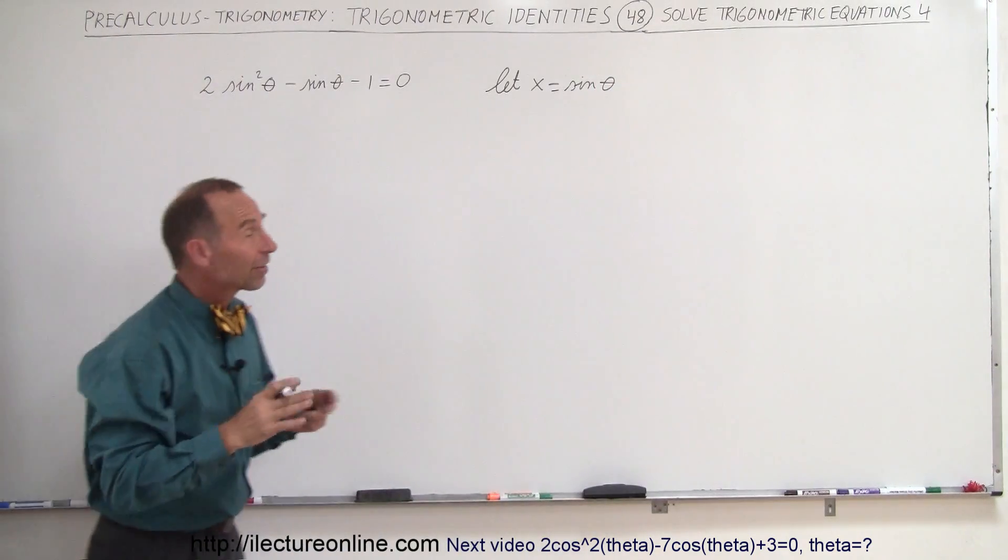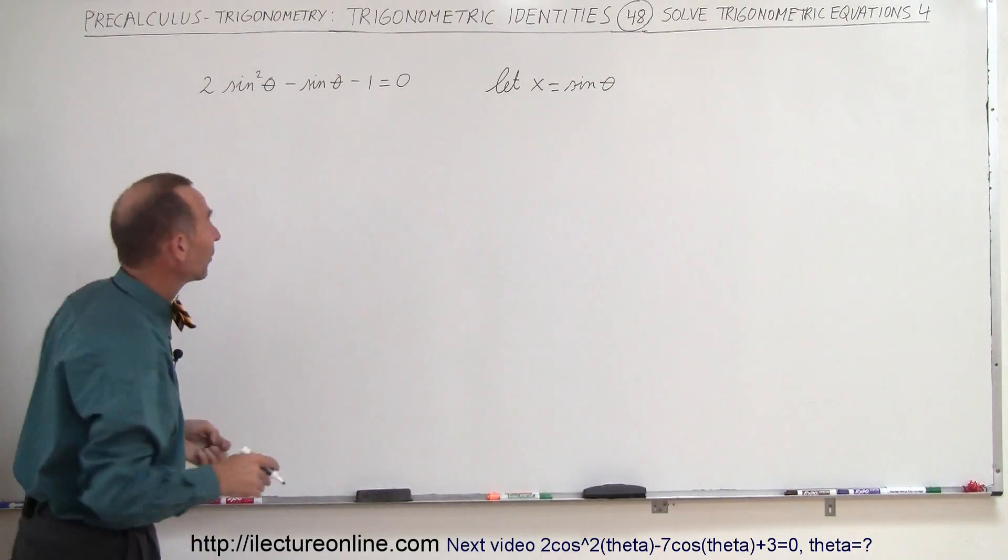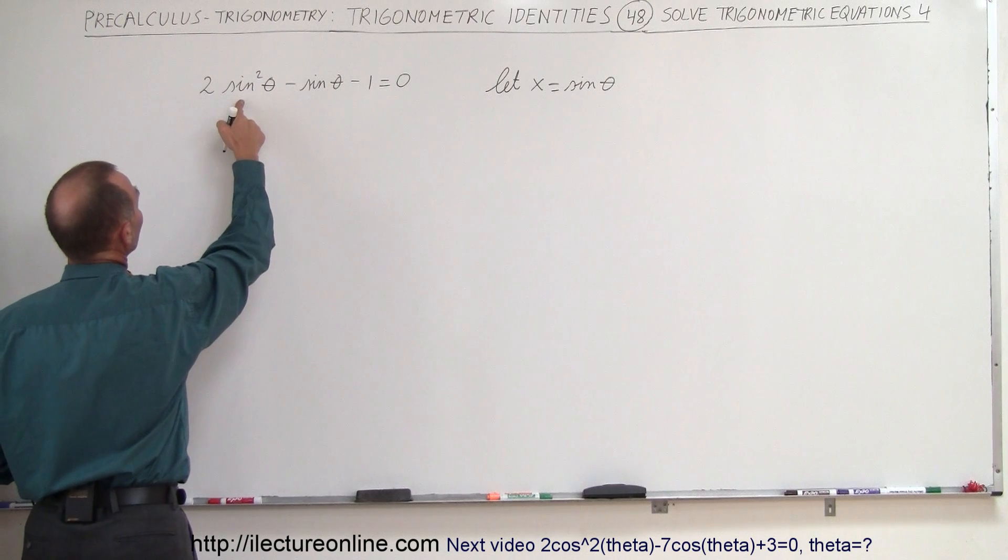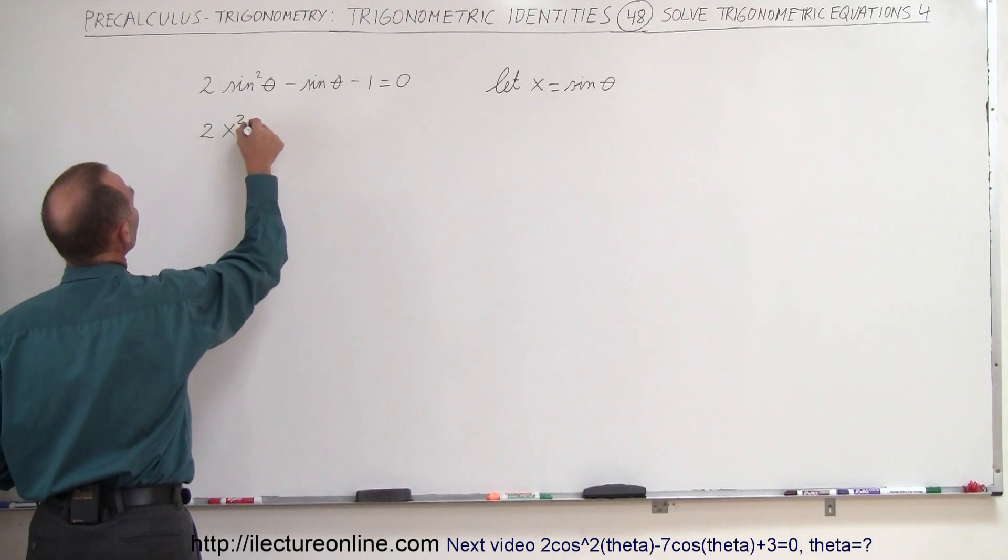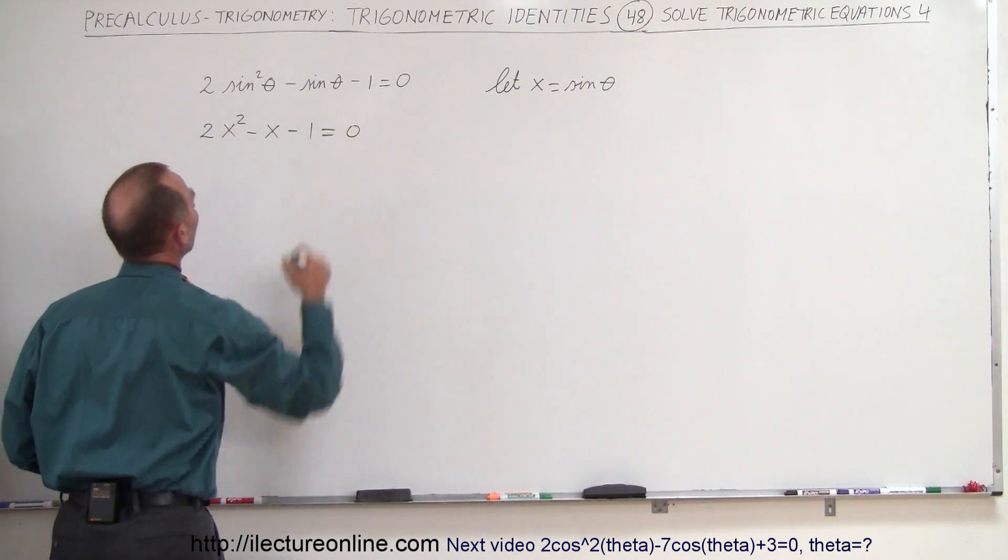And then we're going to solve for x and we'll substitute back later on. So let's try that. Instead of sine of theta we're going to write x so this becomes 2x squared minus x minus 1 equals 0.